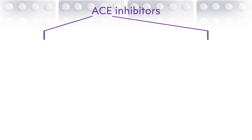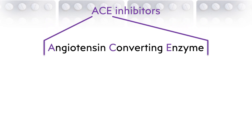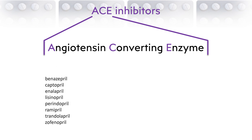The ACE in ACE inhibitor stands for angiotensin converting enzyme. As the name implies, ACE inhibitors are drugs that block the activity of an enzyme called angiotensin converting enzyme. These are the most commonly prescribed ACE inhibitors. Note that their names all end in PRIL, which distinguishes them as a drug group with the same action: to inhibit ACE.